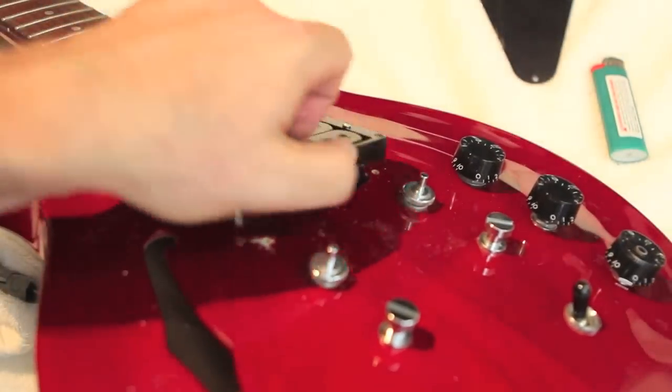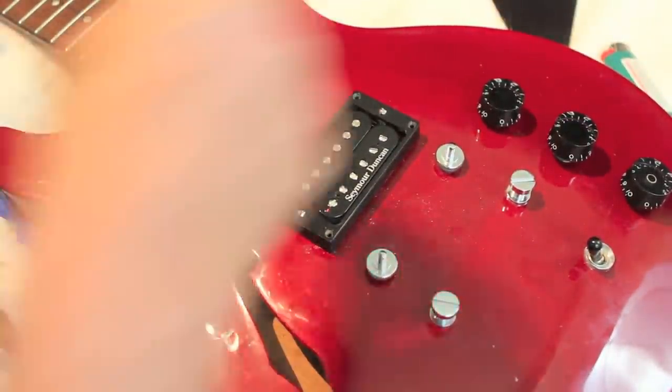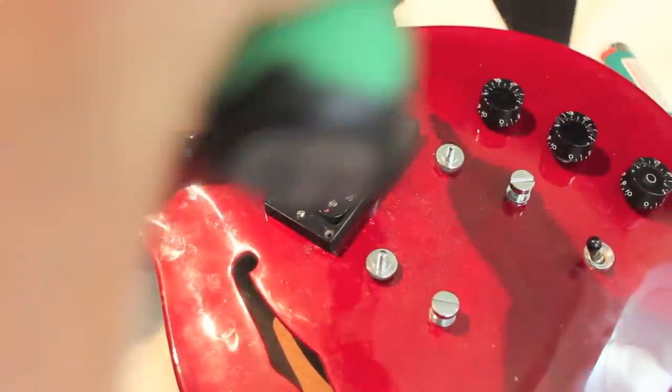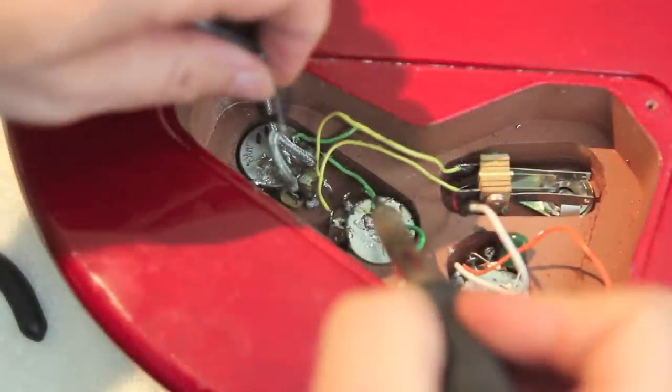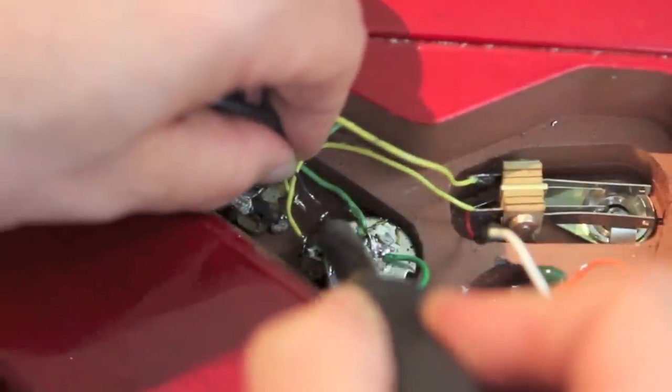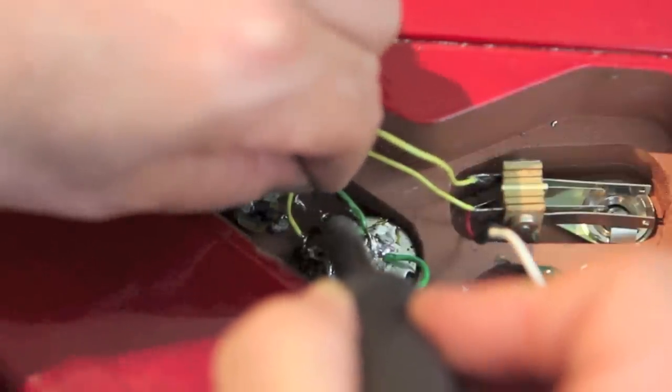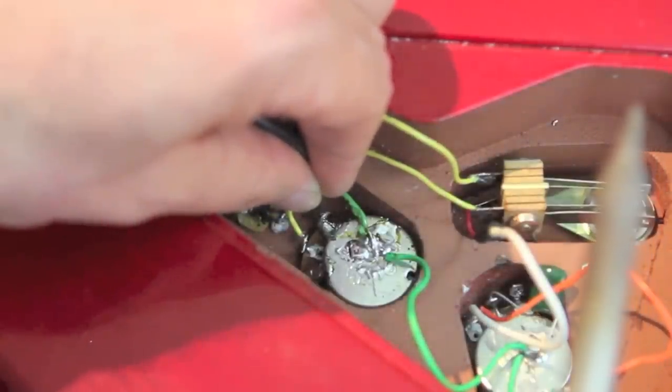Now you can screw the new pickup in using either the screws you saved or the new ones that came with your pickup. Now we're going to work the tinned tip of that black wire through the lug of the volume pot. Heat the lug with the tip of the soldering iron. Thread the black wire through it, making sure it's not touching any other connections. Let it set for a second.